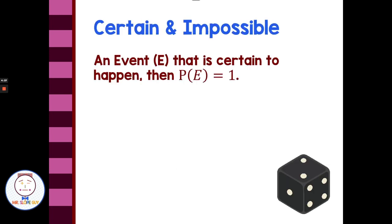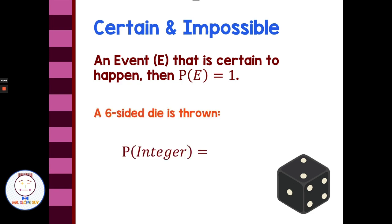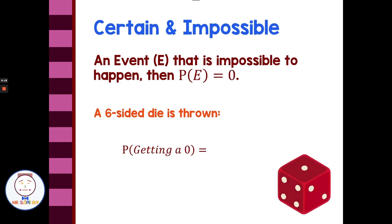There are certain and impossible outcomes. An event that is certain to happen would have a probability of 1. For example, what's the probability that we roll an integer? Integers include 1, 2, 3, 4, 5, 6, 0, and their opposites — all the outcomes are integers, so there's a 6 out of 6 chance, which equals 1. If something is impossible to happen, the probability would be 0.